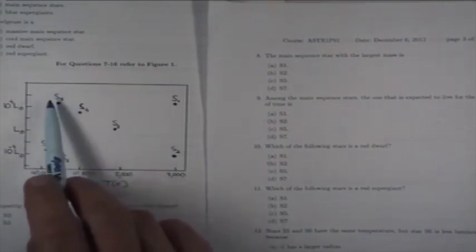S5. S5, right? It's the most luminous main sequence star out of these, shown here, and then we know that it has to have the largest mass. The answer is C.